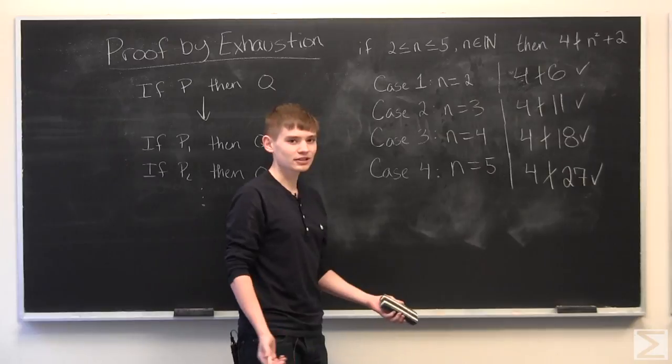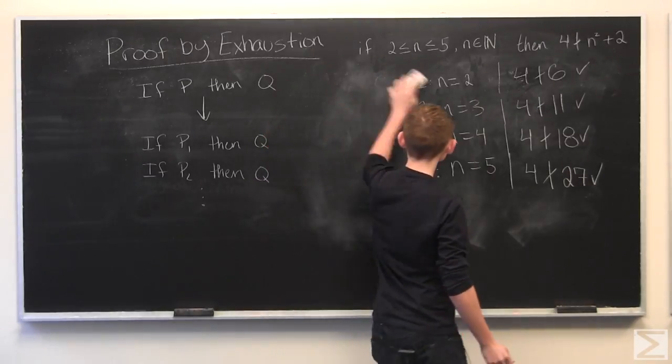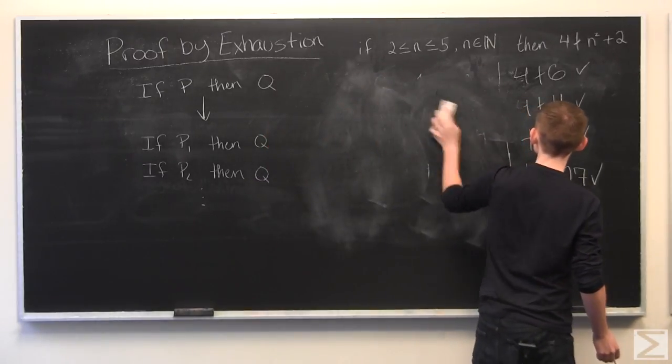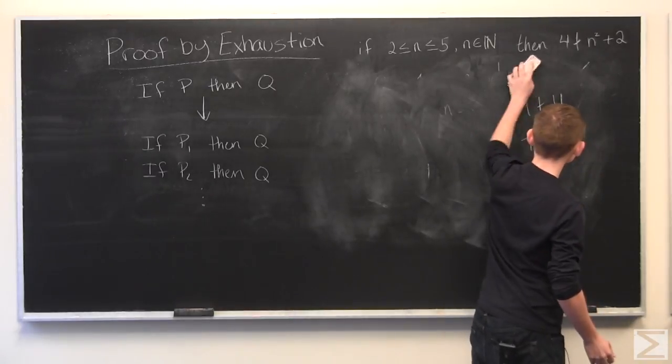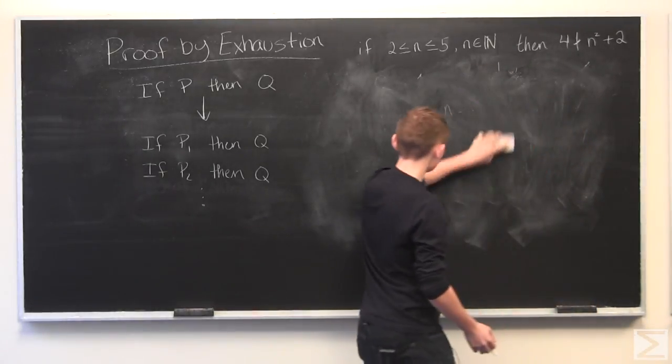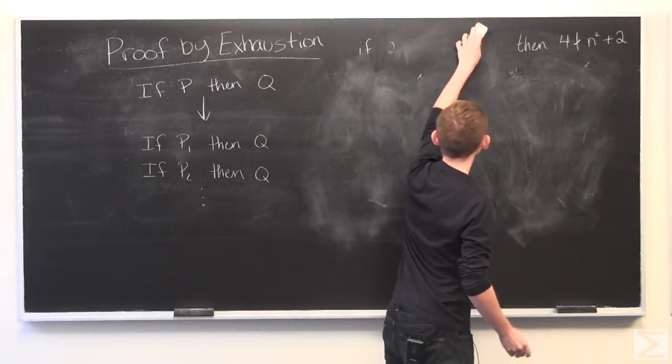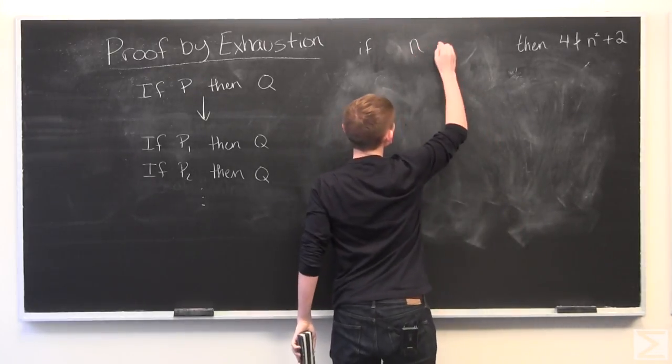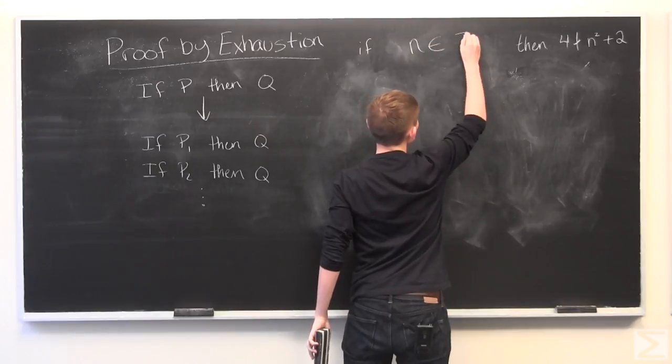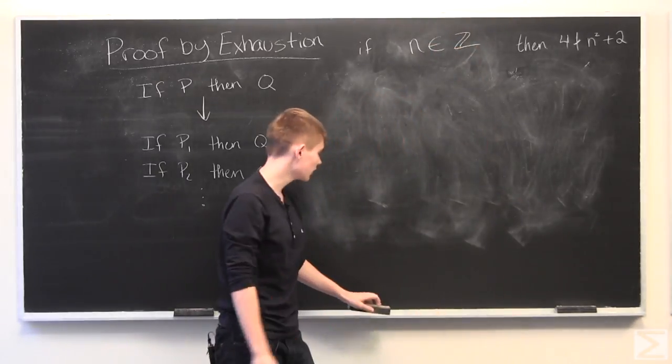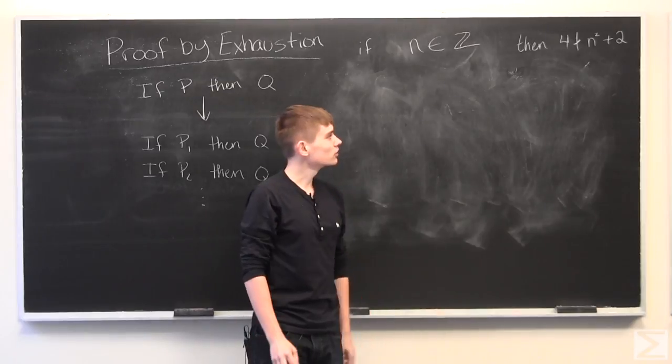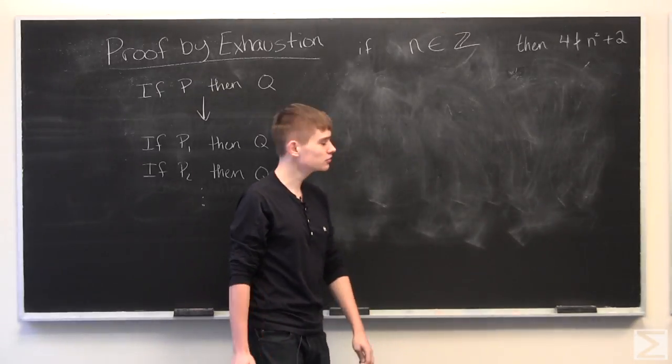And that seems like a silly thing to prove. So we can also use proof by exhaustion to show that if N is any integer, then 4 will not divide N squared plus 2.